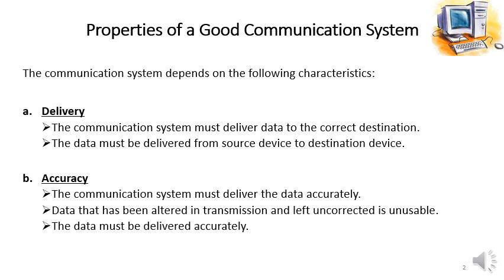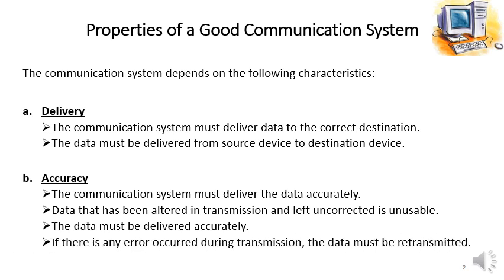The data must be delivered accurately. If any error occurs during transmission, the data must be retransmitted. A retransmission mechanism must be present in a good communication system, so that if there is any failure or error during transmission, that data is retransmitted and reaches the destination in its correct form.